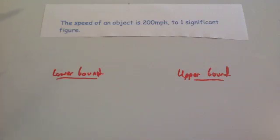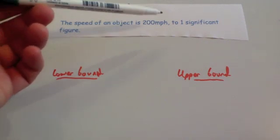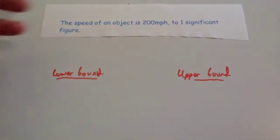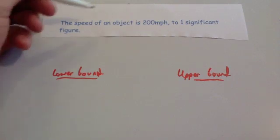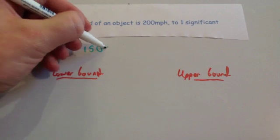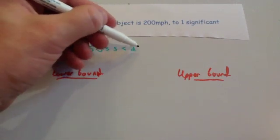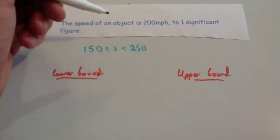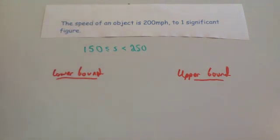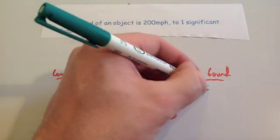The speed of an object is 200 miles per hour to one significant figure. That means it's been rounded so the 2 is at the front and the other digits become 0. The lowest possible value that would round up to 200 is 150, so the lower bound is 150. The upper bound is 250 — 249.9 recurring would round down to 200, so 250 is the boundary. The lower bound is 150 and the upper bound is 250.